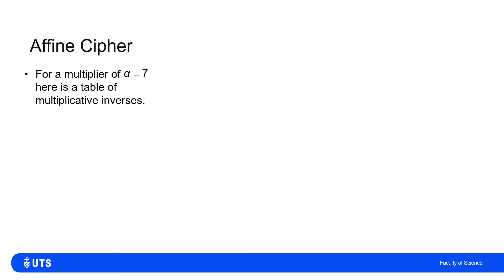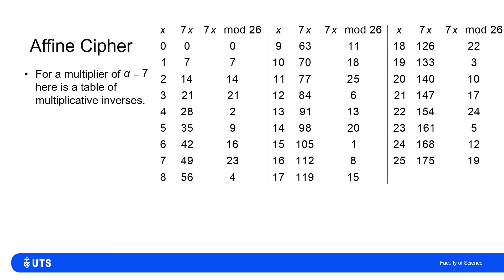For example, picking alpha=7 and beta=0, I have a table to find multiplicative inverses. The first column contains the integers 0 to 25. The second column is 7x — just 7 times those values: 0, 7, 14, 21, 28, and so on. The last column is the remainder of 7x when divided by 26. That column increases by 7 each time until it would give a value larger than 26, in which case I subtract 26 and keep going.